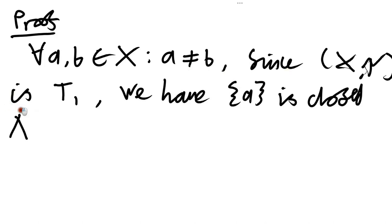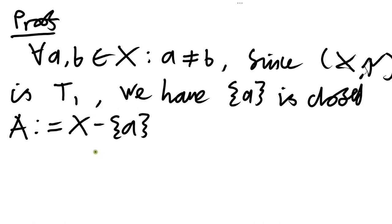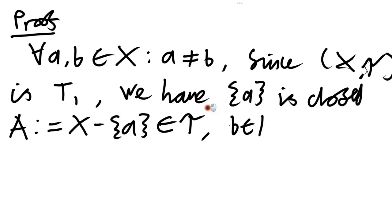Now what we're going to do is define this set capital A to be equal to the complement of that set that just contains a — so it's equal to the set of all members of X not equal to a. That's the complement of a closed set, so that has to be open. Moreover, b is going to be a member of that set capital A, and a is obviously not a member of it.